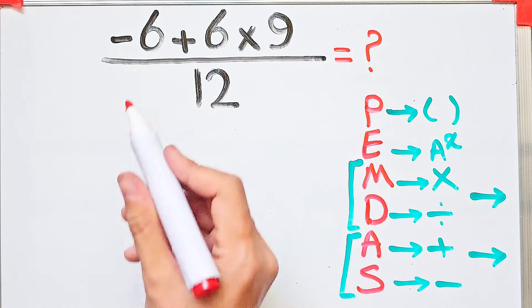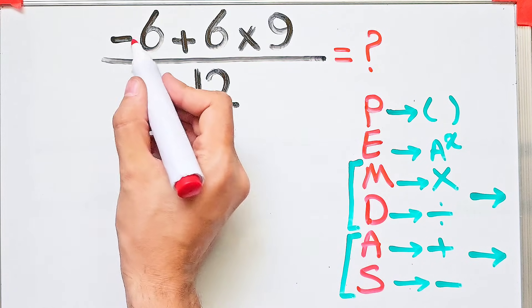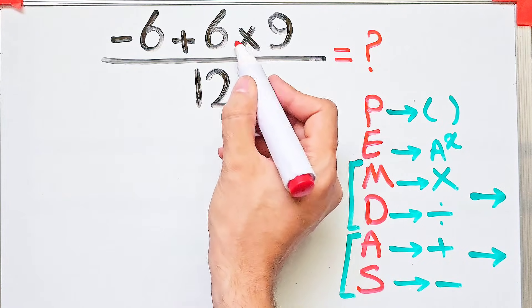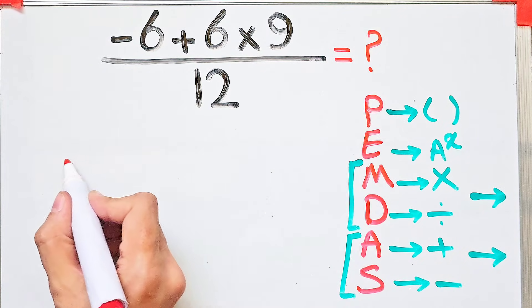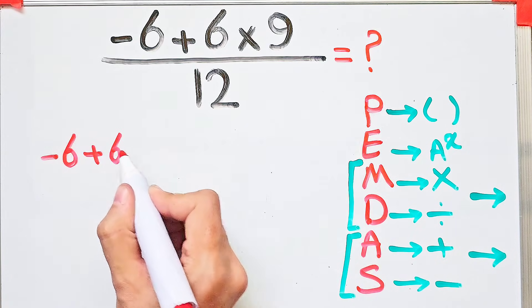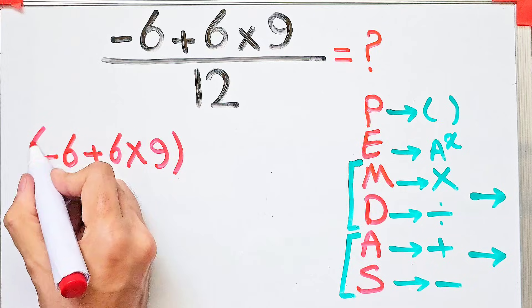In this question, first we simplify the numerator: negative six plus six, then times nine. In the numerator, we have addition and multiplication. The multiplication has higher priority than addition, so first we do the multiplication.